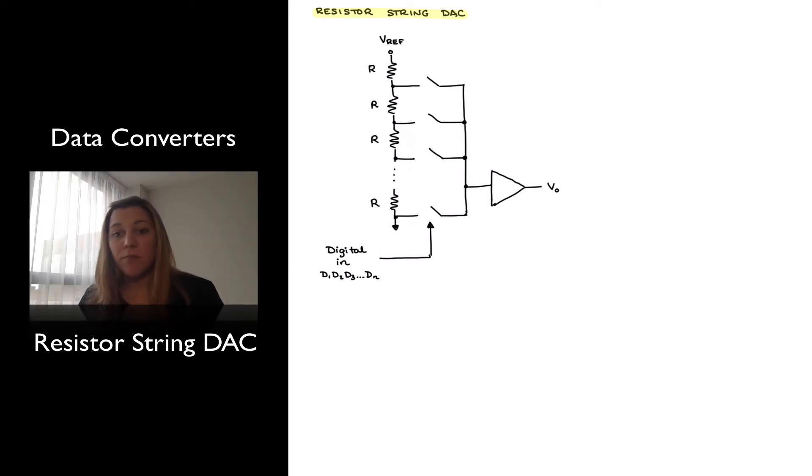So the simplest DAC configuration will simply consist of a resistor string, that's what we have here, where a reference voltage VREF is applied and then there is a series of resistors all of equal value R, and the voltage is tapped across each one of those resistors and basically controlled by a switch.